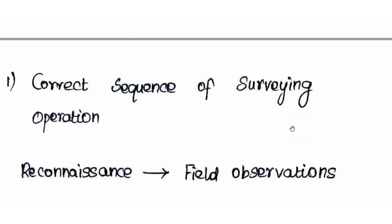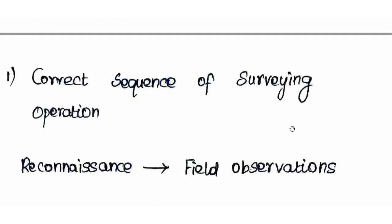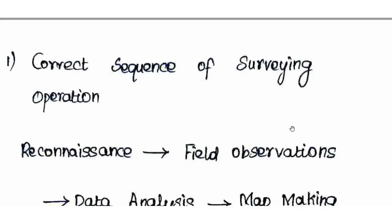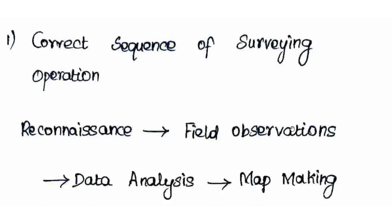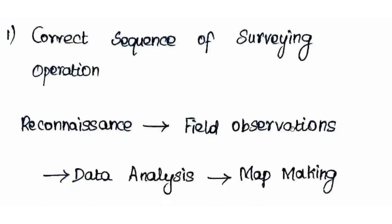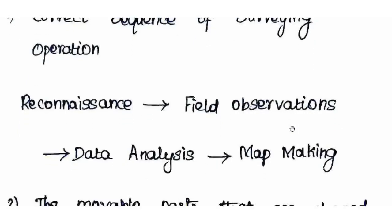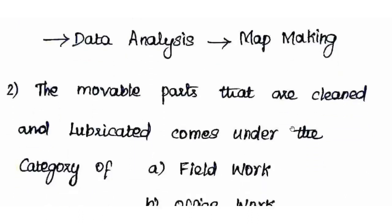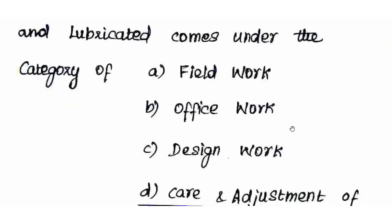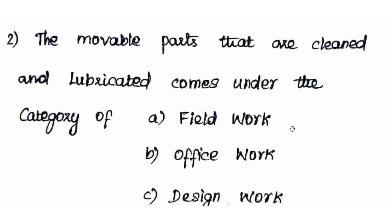Next are previous exam questions. One question asks for the correct sequence of surveying operations: (1) Reconnaissance, (2) Field observation, (3) Data analysis, (4) Map making. Another question asks what category 'cleaning and lubricating movable parts of instruments' falls under — the answer is Care and Adjustment of Instruments.